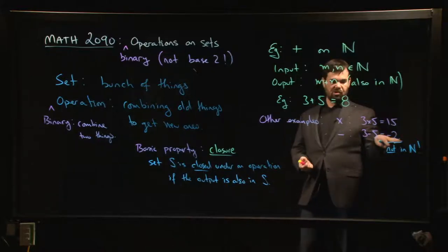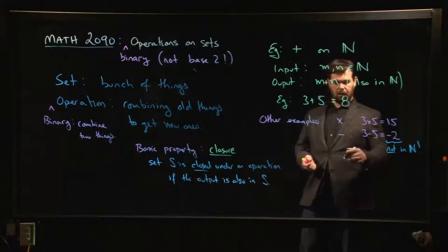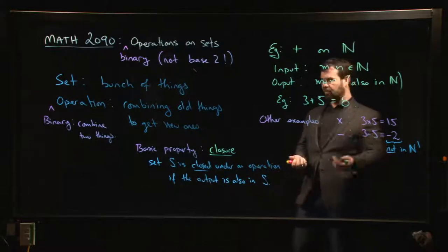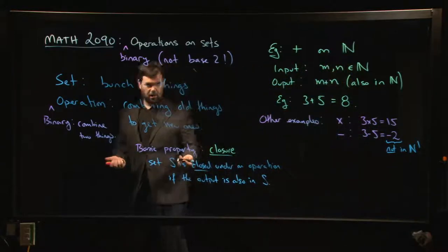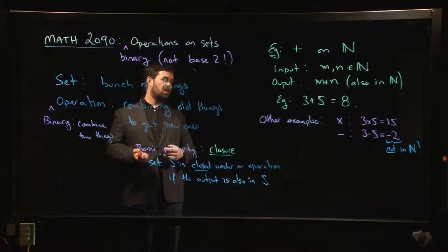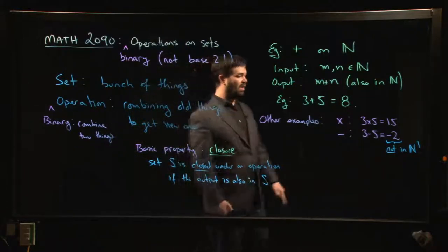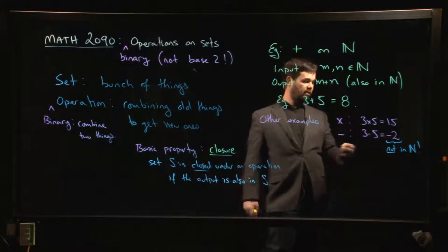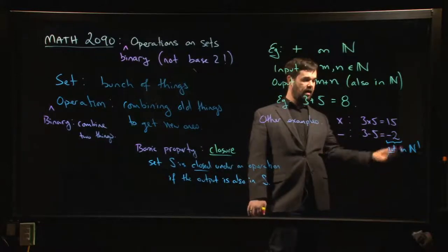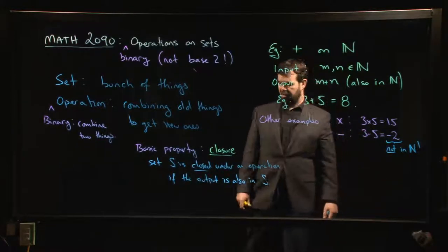Subtraction is not always closed on the natural numbers. Sometimes yes — if the first number is bigger than the second, you still get a natural number. But if the second number is bigger, the difference is no longer a natural number; you land outside the set.